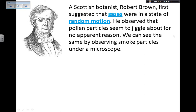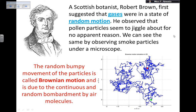Robert Brown suggested that gases were in a state of random motion. He observed pollen particles appearing to jiggle around for no apparent reason. You can see the same effect by observing smoke particles under a microscope. The reason the pollen particles were jiggling around was because they were bumping into the molecules of air, which made them move around for no apparent reason since the molecules of air are invisible.